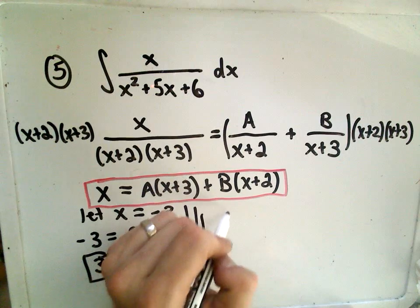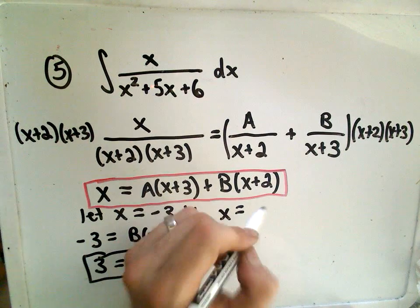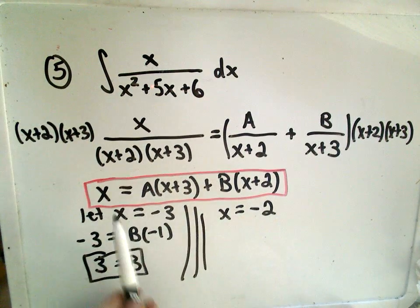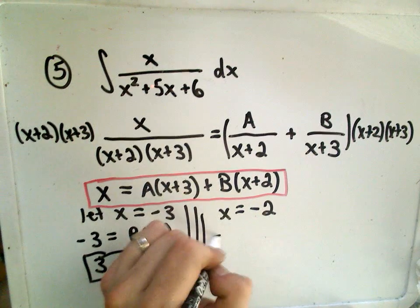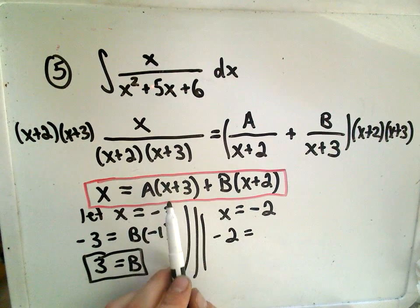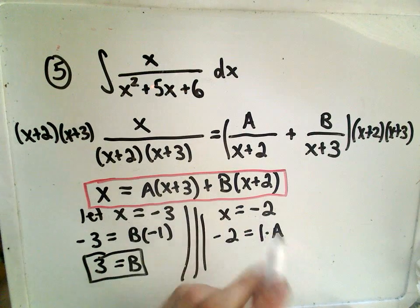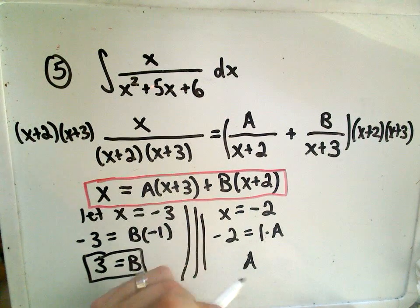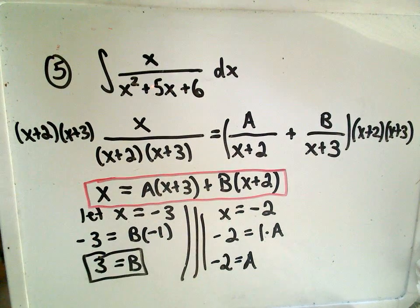Likewise, I think the other value that would make sense to use would be x equals negative 2. So if we plug that in, we'll have negative 2 on the left. On the right side, negative 2 plus 3 is 1, so we'll have 1A. The B terms cancel out. So now we know that A is simply equal to negative 2.